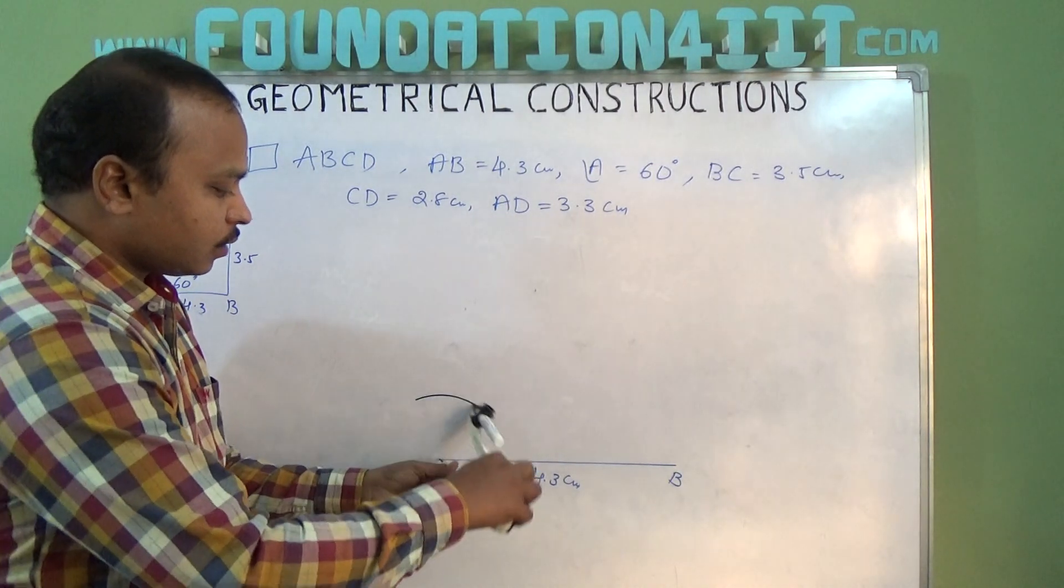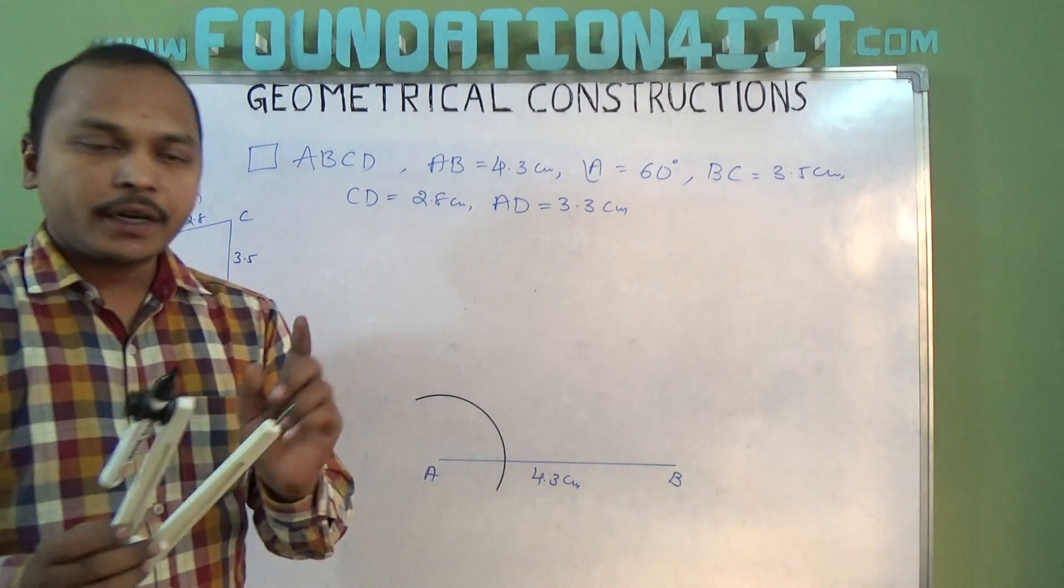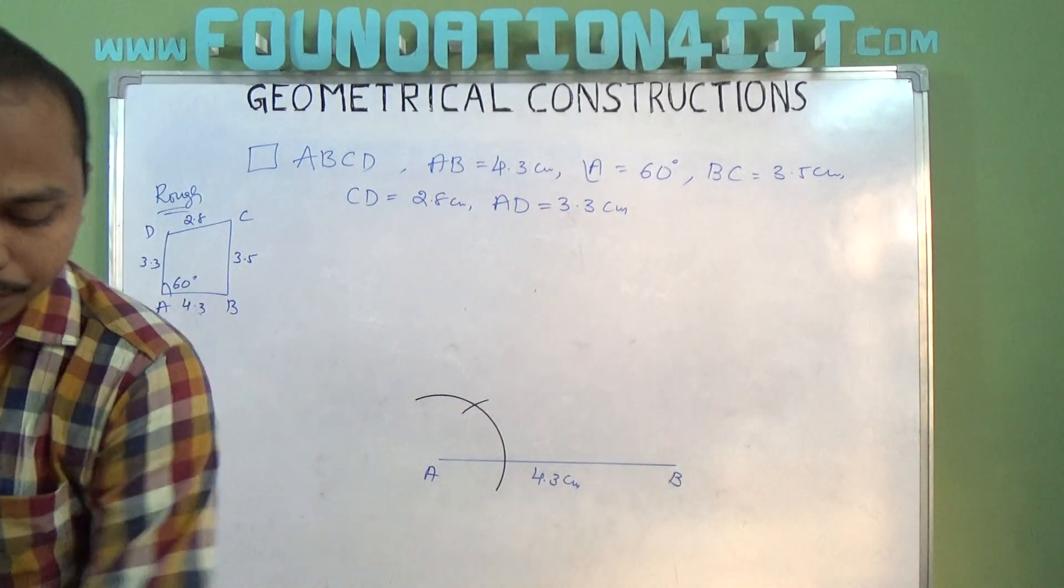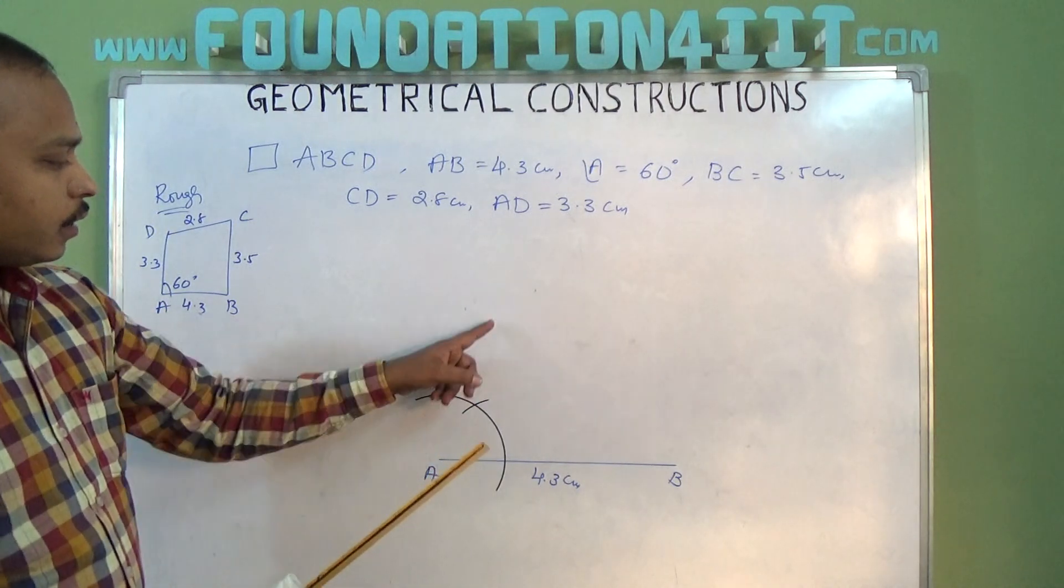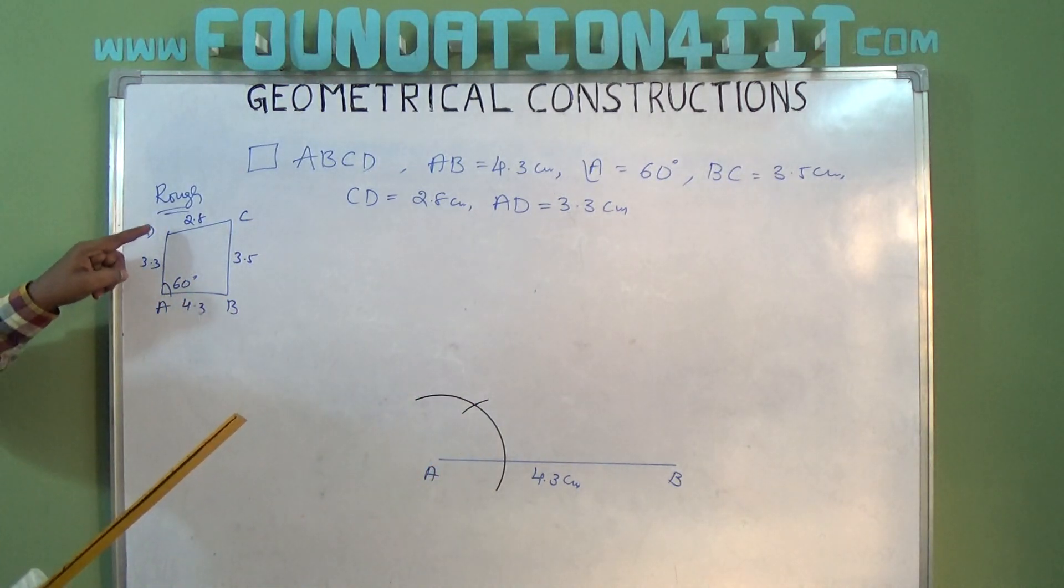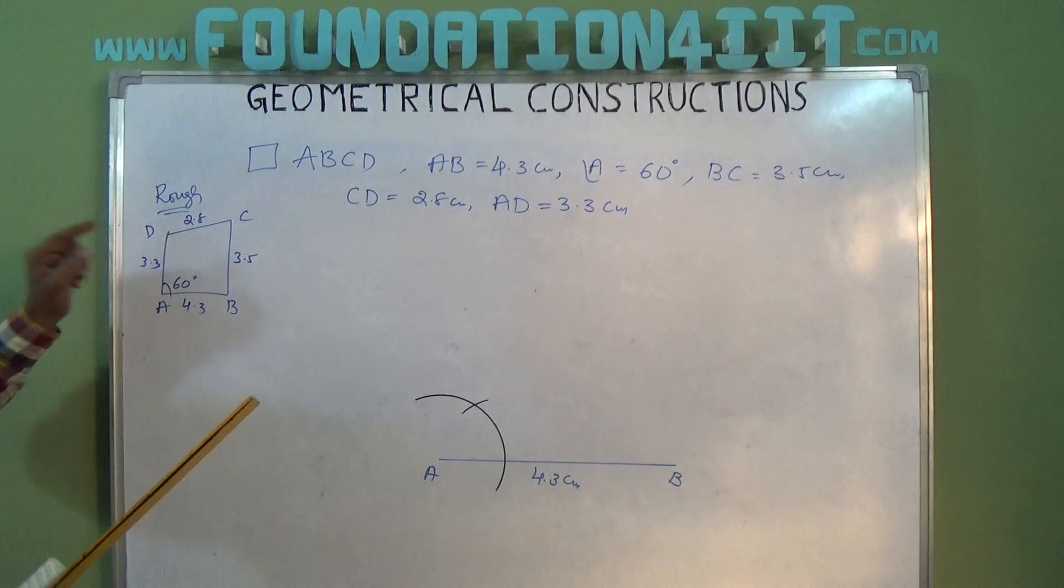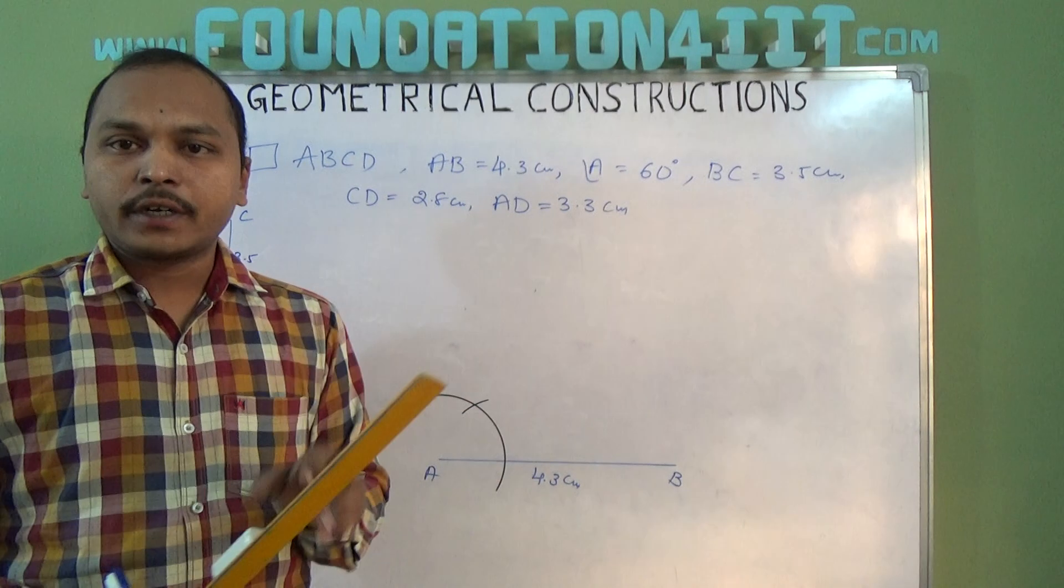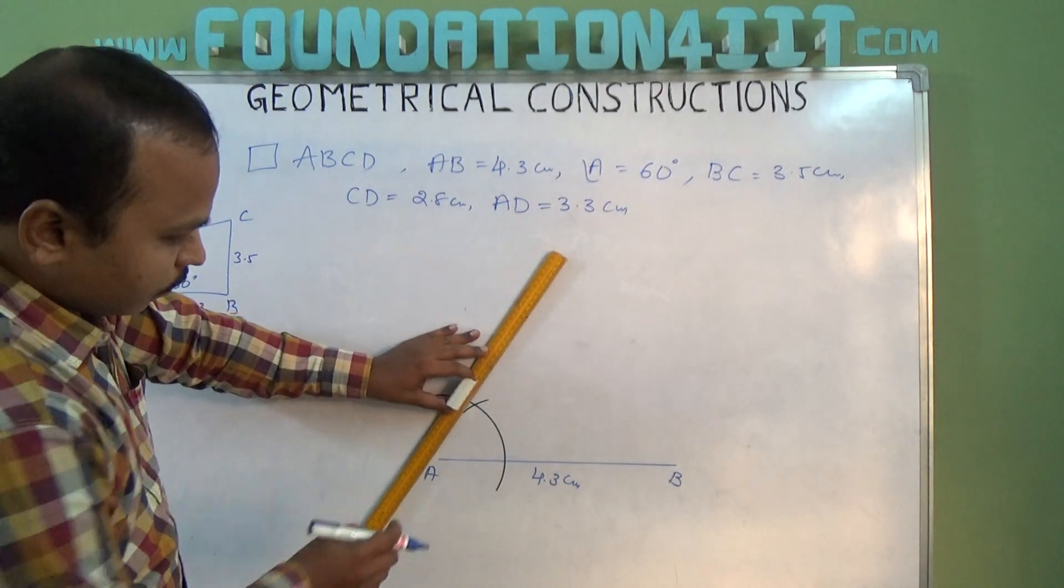Draw an arc. With the same radius, cut this arc to get 60 degrees. Now from A, if you go to some point D with 3.3 distance, we can extend this line and cut 3.3 to get vertex D.